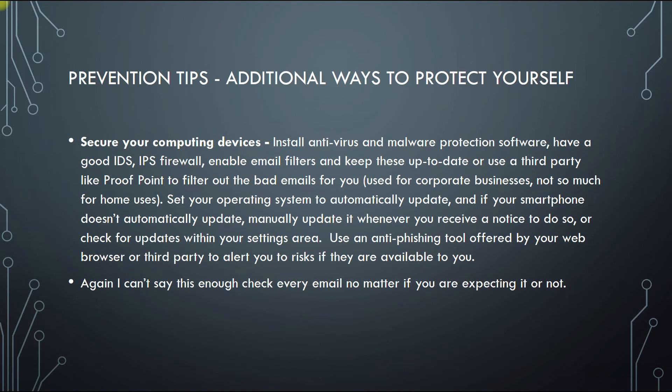Office 365 has a great email filter system already in place. Set your operating system to automatically update, and your smartphone device — if it doesn't automatically update, manually update it. You want to make sure all your software is up to date. Some big ISPs had issues where people were spoofing their domain so it looked like emails were coming from the ISP, trying to collect people's email and password logins — and people were actually falling for it. They were using domain spoofing techniques so it looked like it was coming from that domain, but it was taking them to a phishing landing page.